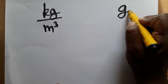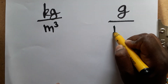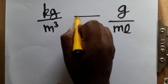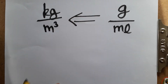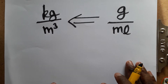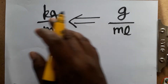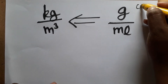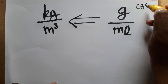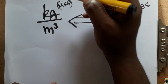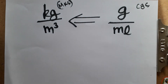Today we are going to learn: gram per mL is equal to how many kg per meter cube. This is a CGS system — centimeter, gram, second — and this is an MKS system — meter, kilogram, second.